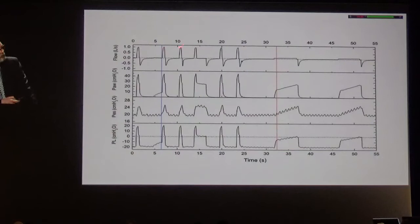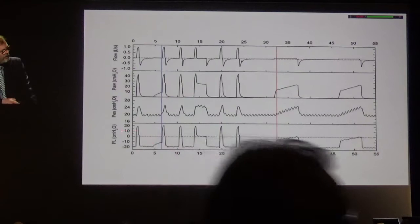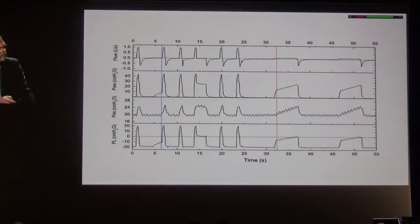From top to bottom you have the flow, the airway pressure, a classical end-expiratory and end-inspiratory occlusion, then the esophageal pressure, and then the transpulmonary pressure calculated classically as airway minus esophageal pressure. You see the low-flow inflation—very, very low flow—to get rid of the resistive pressure.